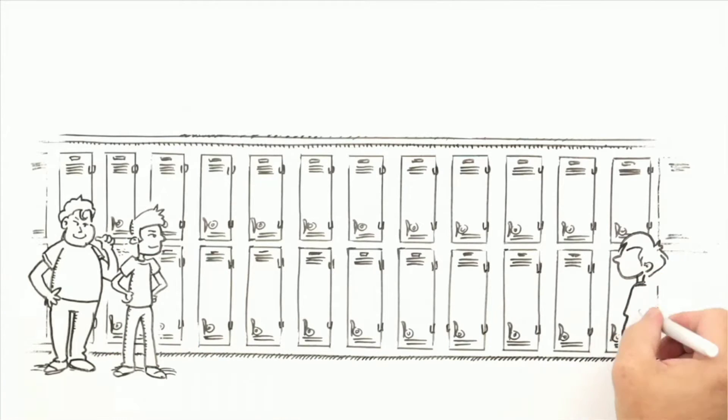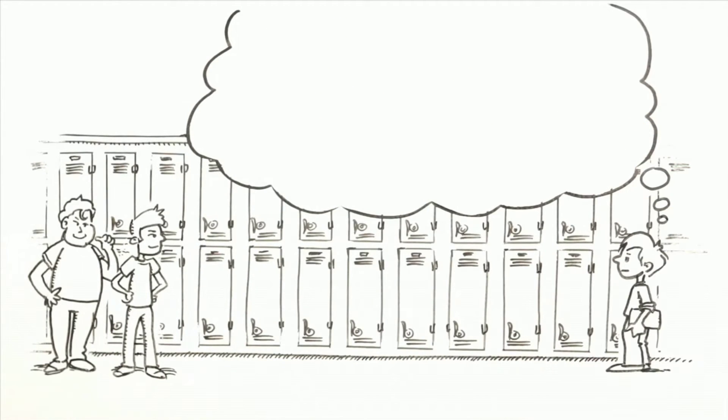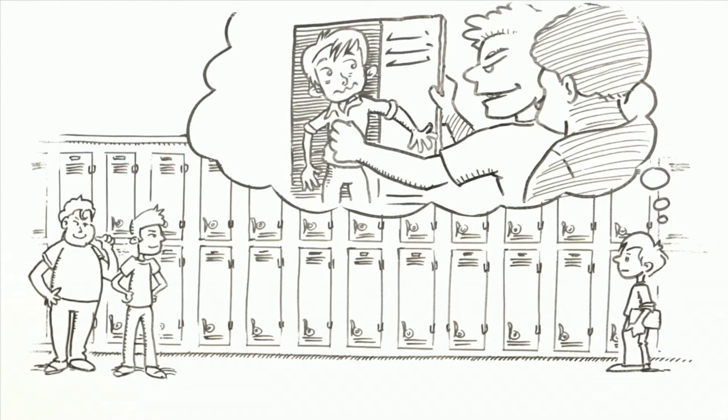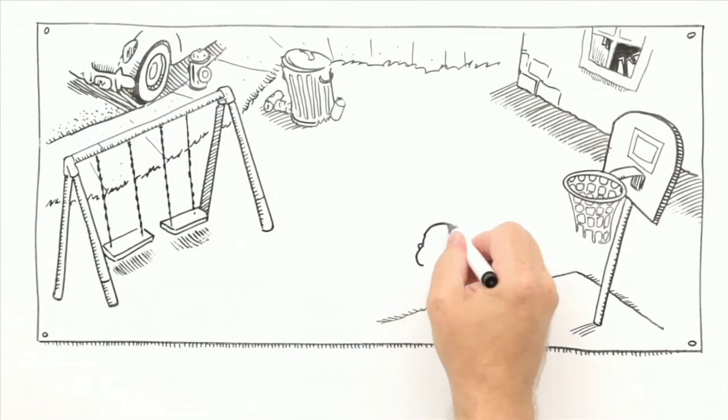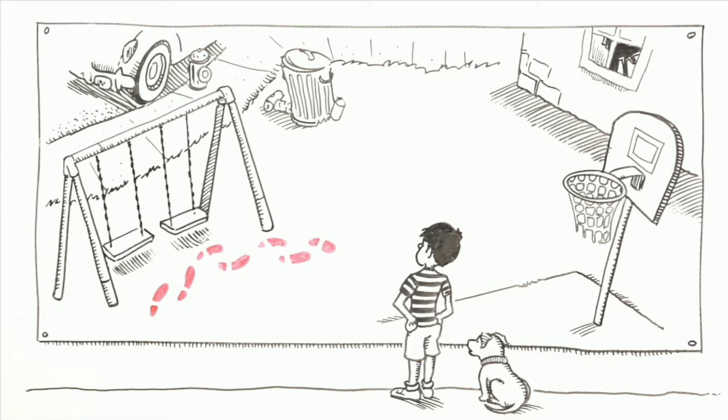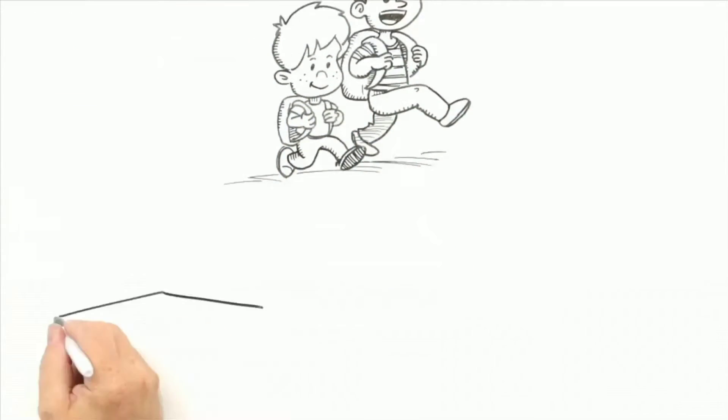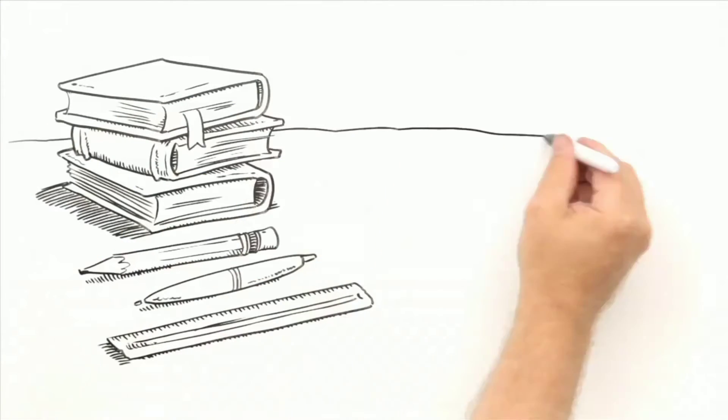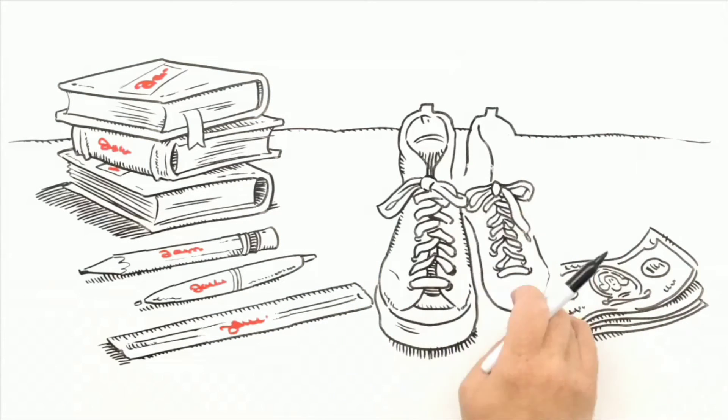Mag-isip ng paraan para maprotektahan ang sarili mo. Sabi ng Kawikaan 22-3, matalino ang nakakakita ng kapahamakan at nagkukubli. Iwasan ang mga lugar kung saan pwede kang mabuli at umalis agad kung mangyari ito. Huwag pumasok sa school mag-isa. Sumabay sa kaibigan. Lagyan ng pangalan ang mga gamit mo. Huwag magdala ng pera o mamahaling mga gamit sa school.